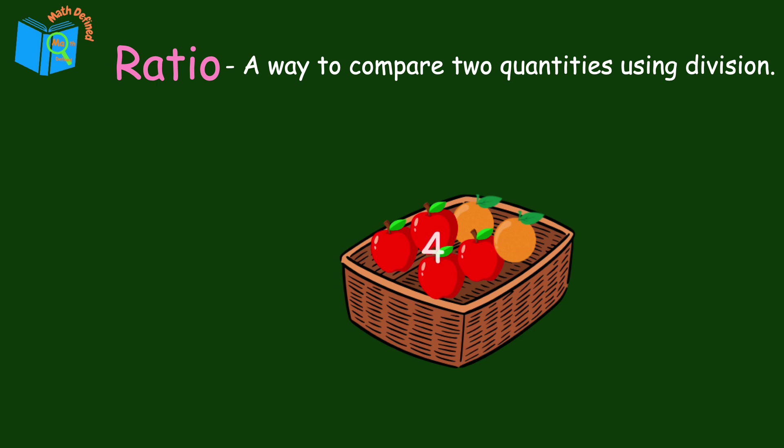For example, if I have four apples and two oranges, the ratio of apples to oranges is four to two. And this is just one of the three ways we can write a ratio.